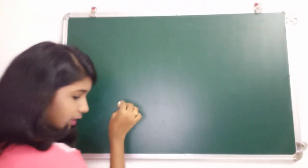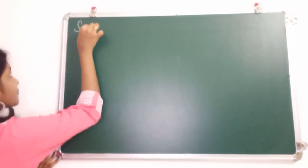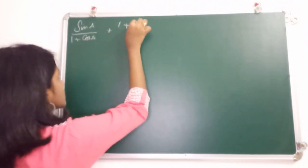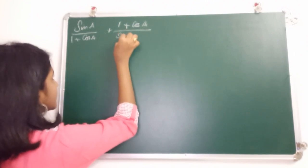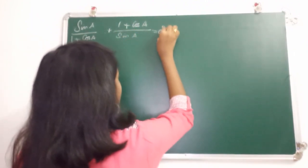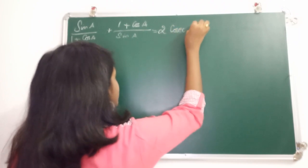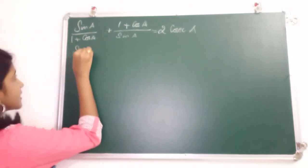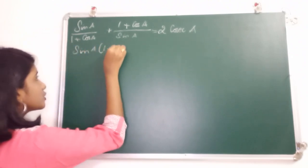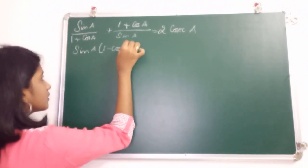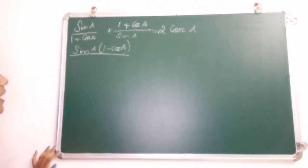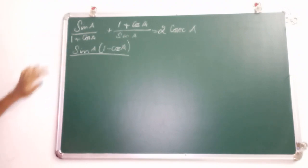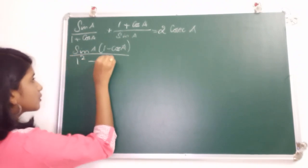Now for the next proof: sin A divided by (1 + cos A) plus (1 + cos A) divided by sin A equals 2 cosec A. We rationalize the first term by multiplying by (1 minus cos A). The denominator becomes (1 + cos A)(1 minus cos A), which is in the form (a + b)(a - b), so it equals 1 minus cos²A.